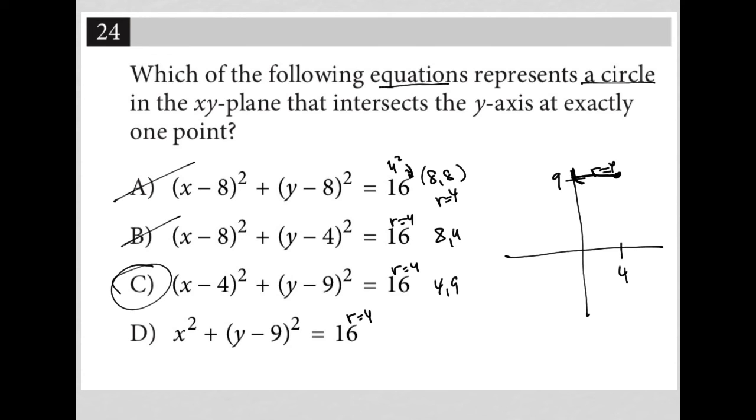The key here was having 4 for the x-value of the center, not for the y-value. Having 4 as the x-value of the center gives us a circle that barely touches the y-axis, because the radius of 4 units takes us from the center exactly to the y-axis.